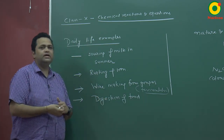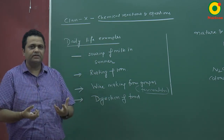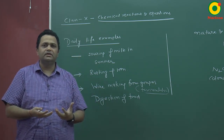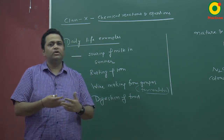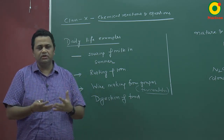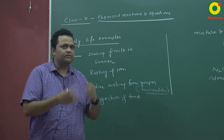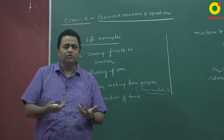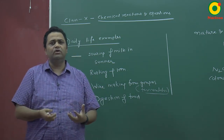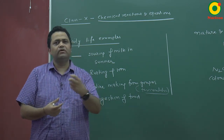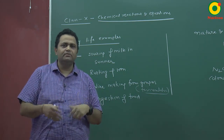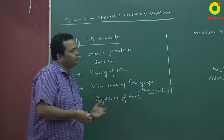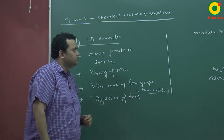Another example is the digestion of food. Whatever we eat, the body digests it. There are different enzymes and acids in the body. The larger chain of food molecules breaks and converts. Glucose we eat is ultimately broken down into CO2, water, and energy. So in our environment, there are many chemical changes which we observe.